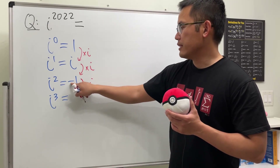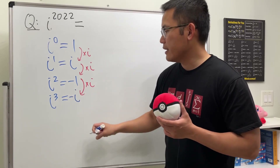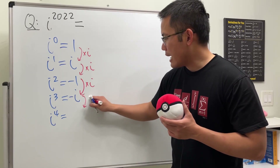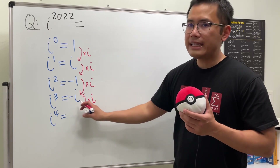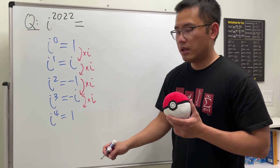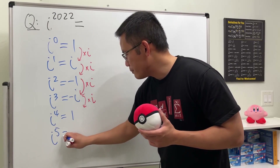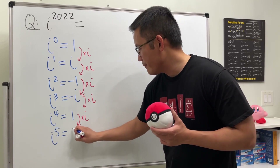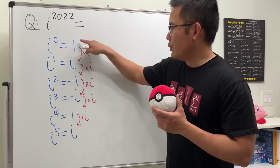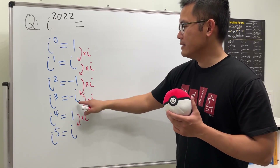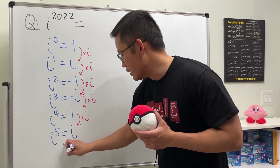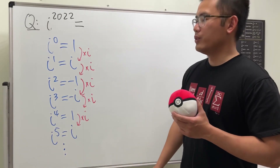So i to the third power is negative 1 times i, giving us negative i. Then i to the fourth power — we multiply by i again, and i times i is negative 1, times the negative, so we actually get positive 1. One more: i to the fifth power is just 1 times i. Do we see a pattern? Yes — we have 1, i, negative 1, negative i, and then 1, i, negative 1, negative i, and so on.